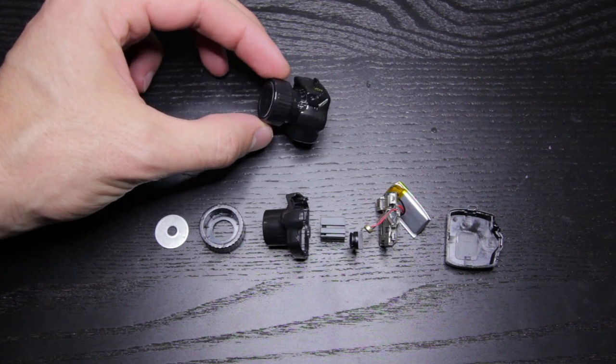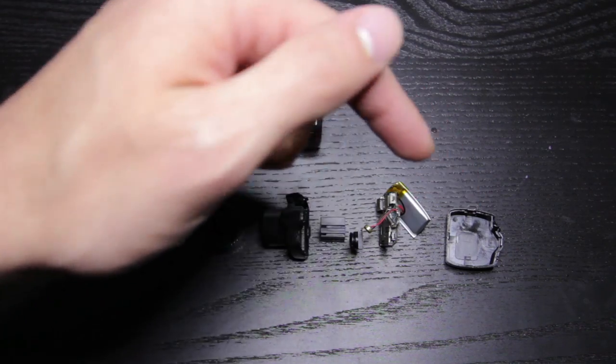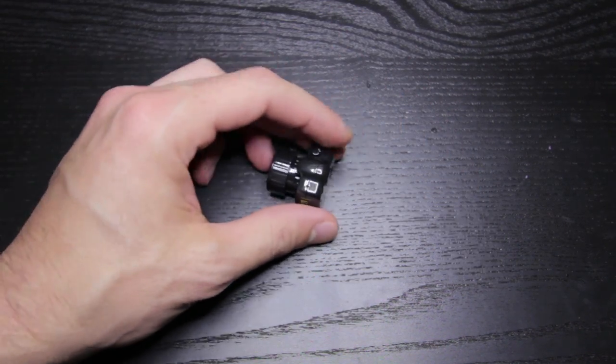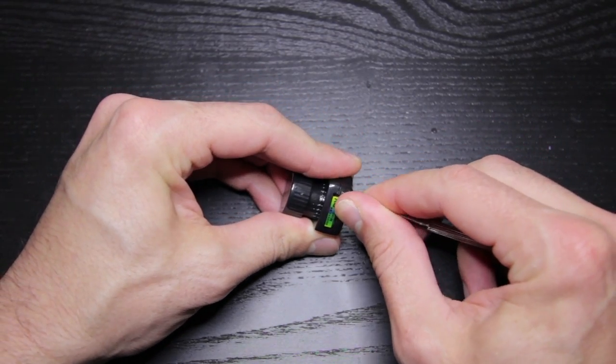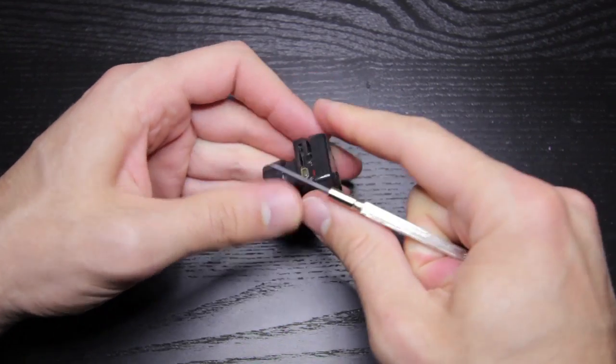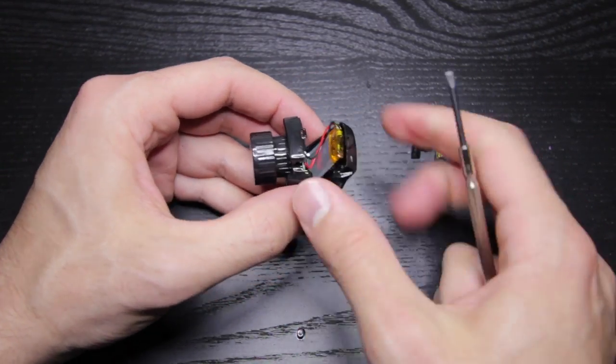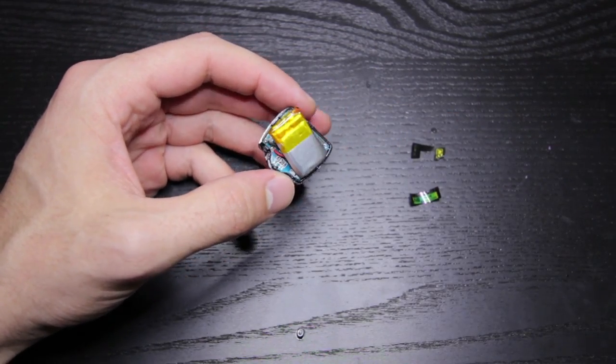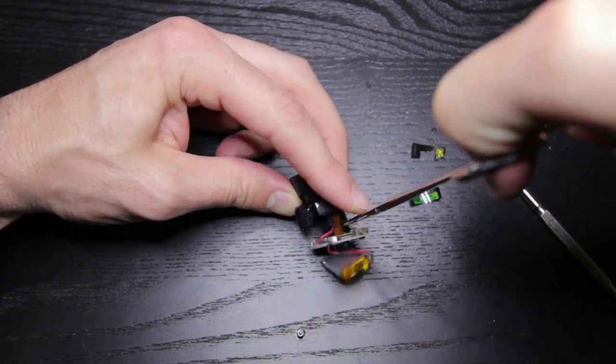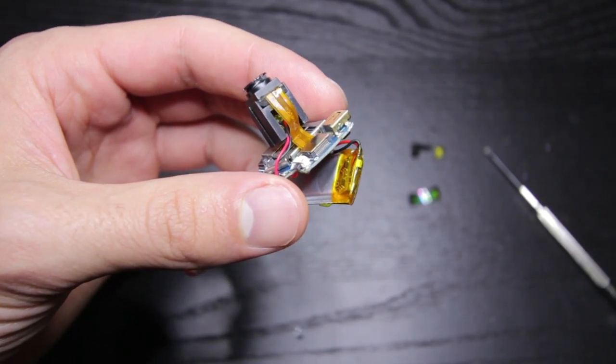This is the guts inside the Y2000. It comes apart into all these pieces and we'll only focus on the electronics right here. To take it apart all you need to do is remove the stickers, pry the plastic enclosure apart, and delicately remove all of the electronics. The part you need to watch out for is the very small ribbon cable which connects the circuit to the camera sensor.